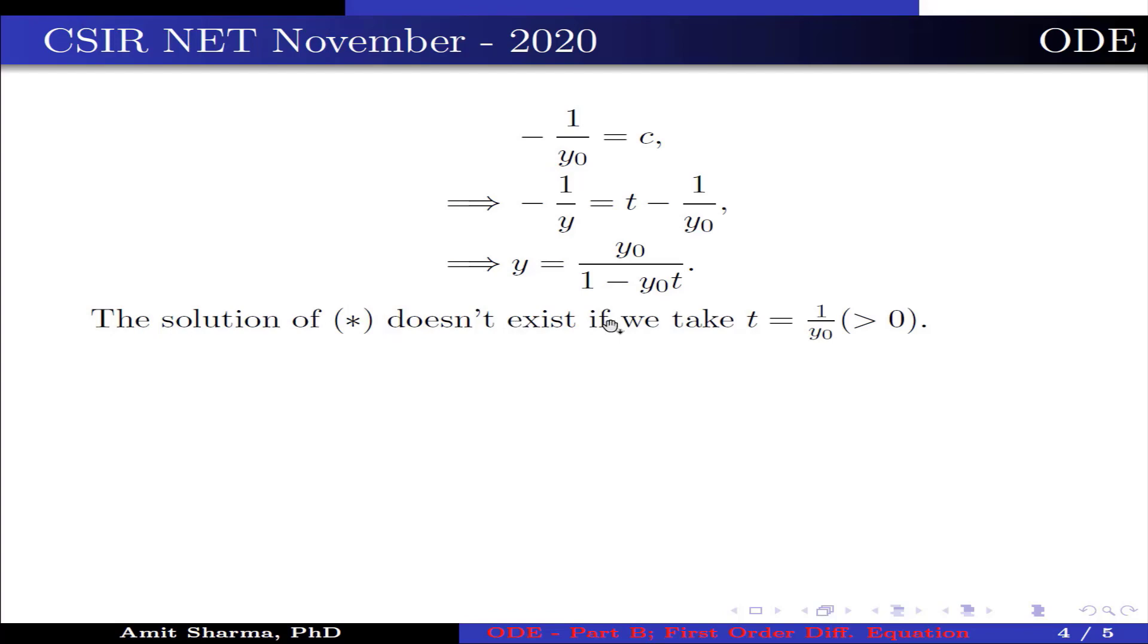The solution of (*) does not exist if we take t = 1/y₀, which is greater than 0. Therefore, (*) does not have global solution. This implies options 1 and 3 are false.